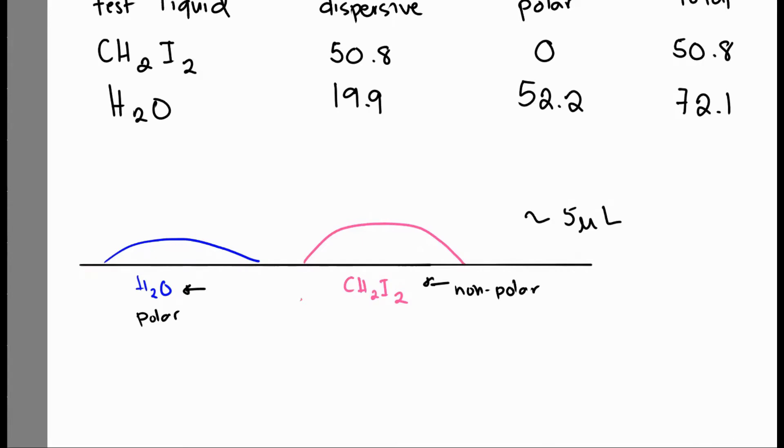Then we will measure the contact angle of this liquid with respect to the surface. We do that using software. The idea is we get the tangent to the contact of our droplet and our surface. You can use the circular method, draw a circle, measure the inscribed arc, and so on. But the basic idea is you get the tangent to this one and measure this contact angle. Let's assume that for H2O, the contact angle is 45 degrees. Meanwhile, for CH2I2, your contact angle is around 60 degrees.